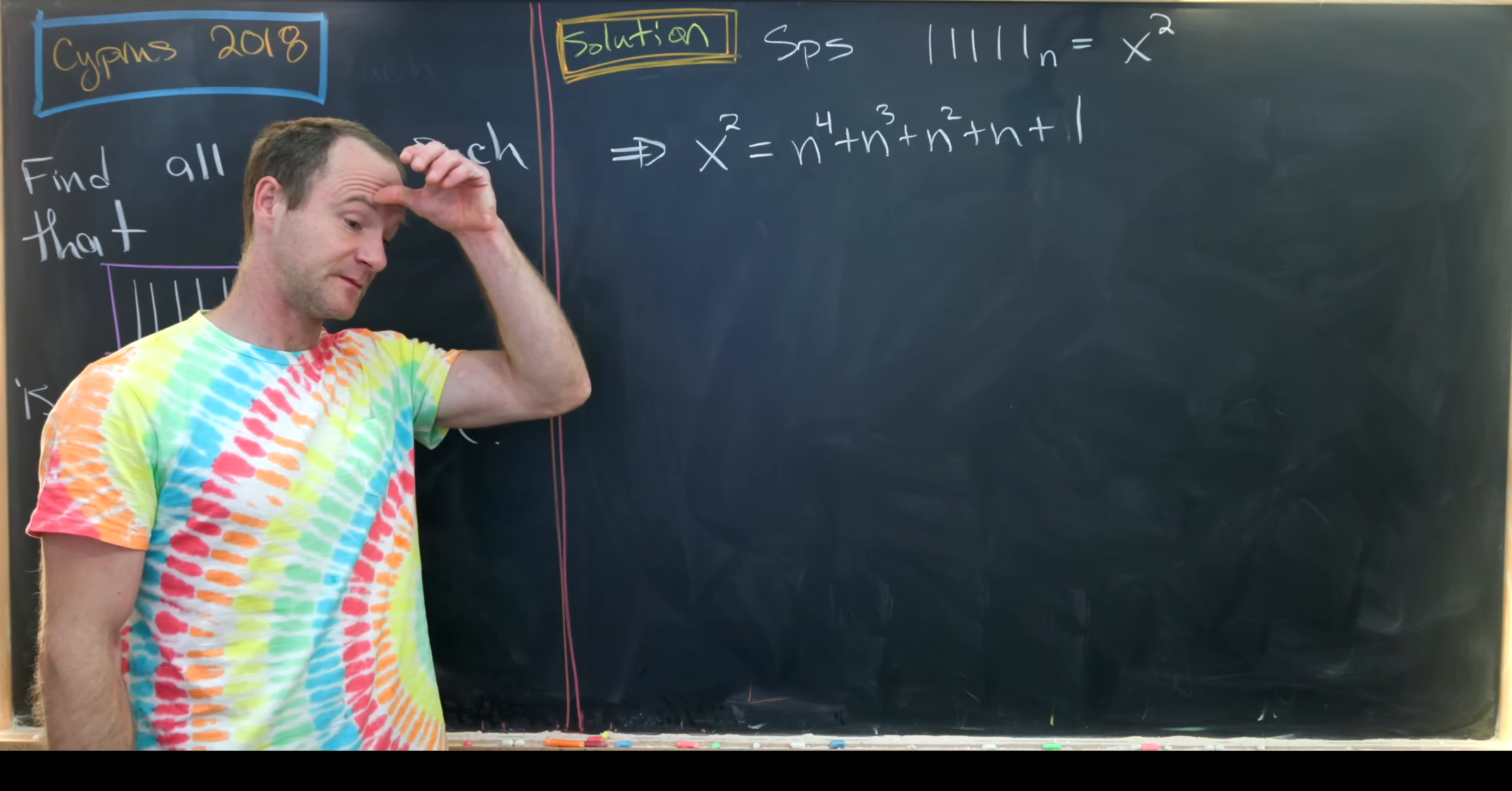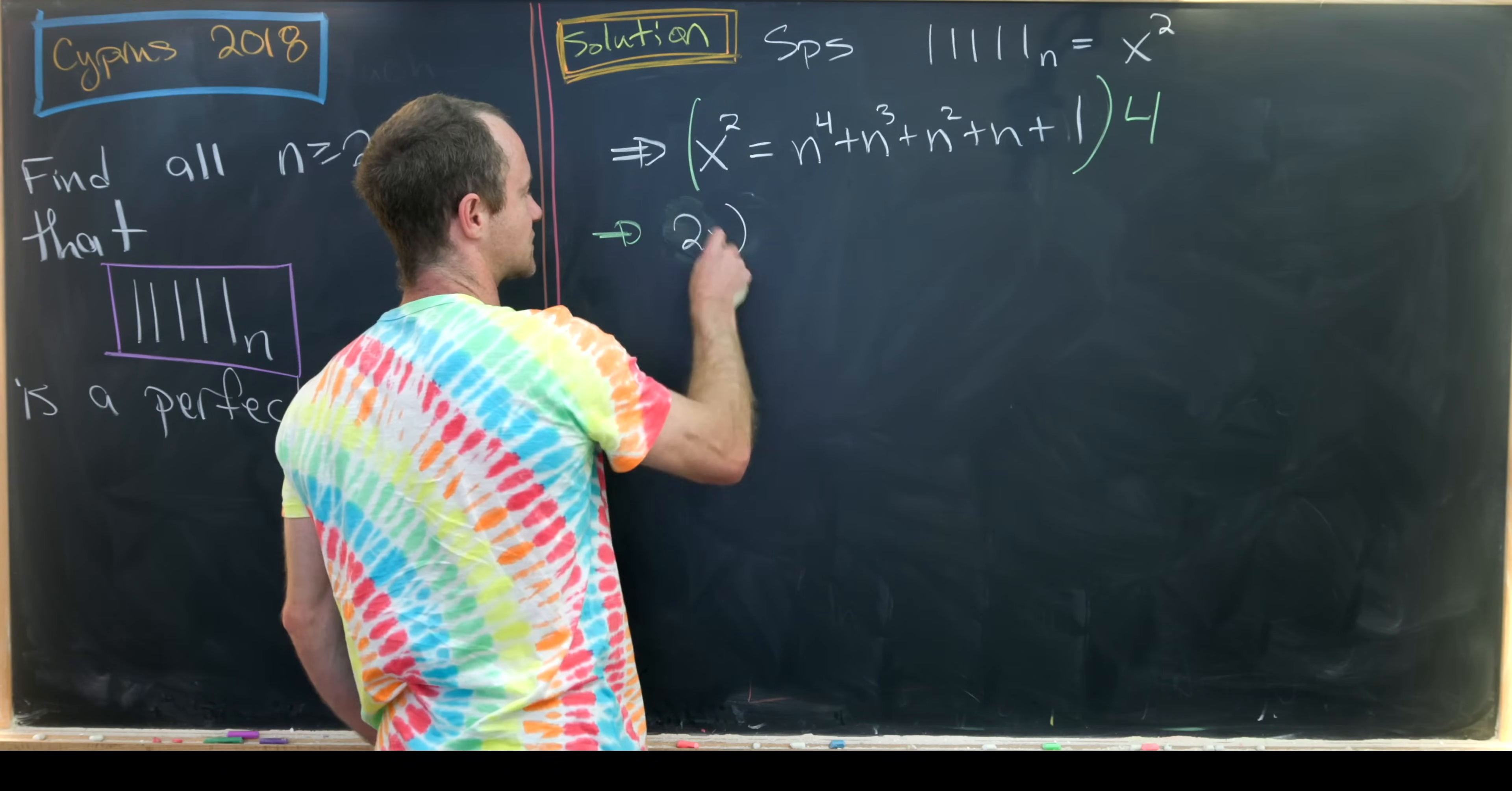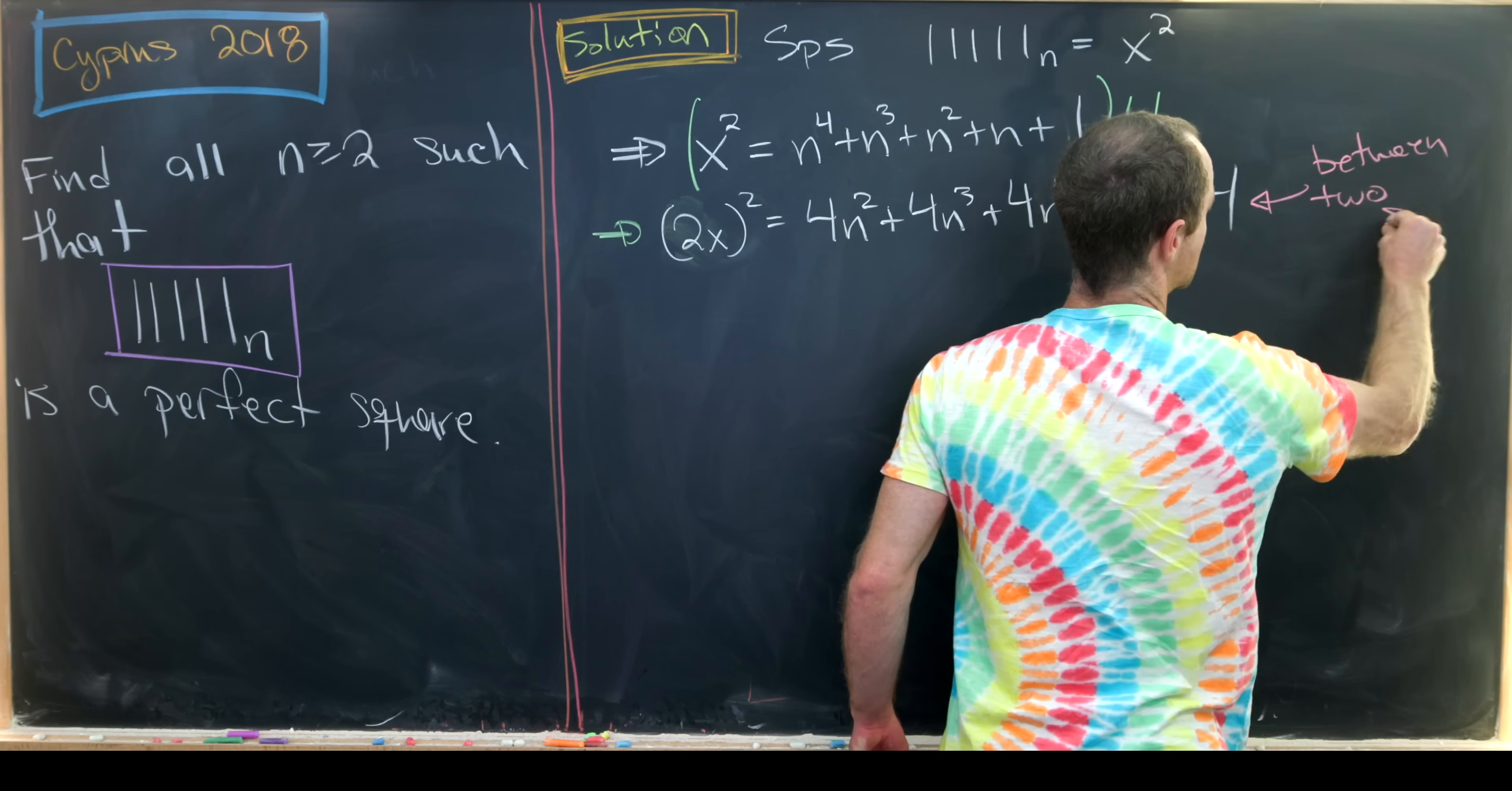And whenever you square a binomial or a trinomial, you get different coefficients of these things. Except for the case when the coefficients are 4, then a lot of the coefficients from what you squared happen to be the same. Anyway, all of this is to be said that this actually motivates us to multiply this whole thing by 4. And let's notice that'll give us 2x quantity squared equals 4n to the 4th plus 4n cubed plus 4n squared plus 4n plus 4.